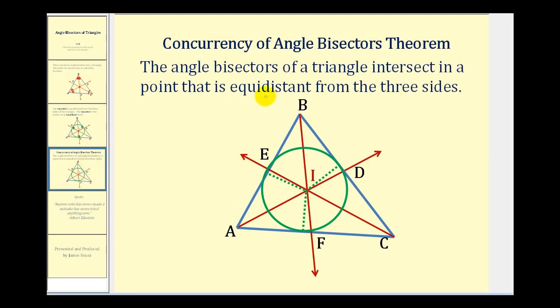We'll go ahead and finish by talking about the concurrency of angle bisectors theorem, which states that the angle bisectors of a triangle intersect in a point that is equidistant from the three sides. So we already stated this, but it's often also stated as a theorem.